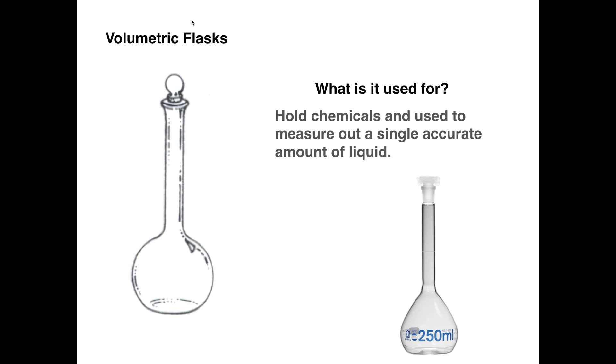Volumetric flasks aren't really going to be used very much in here until the second semester. But what their purpose is, is they're used to hold chemicals just like the previous two, but they're used to measure out only a single accurate amount of liquid. So beakers should never be used to measure things. And technically, Erlenmeyer flasks also should never be used to measure anything. The fact that they have little lines that let you know about how much there is, is just there out of convenience. You don't use them to actually measure things.